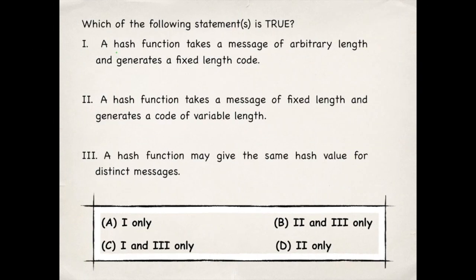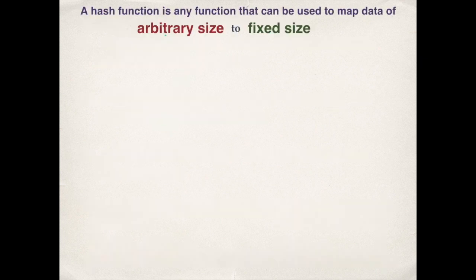Given these three statements regarding hash functions, we need to find the statements that are true. Let's start with the definition of a hash function: a hash function is any function that can be used to map data of arbitrary size to fixed size.